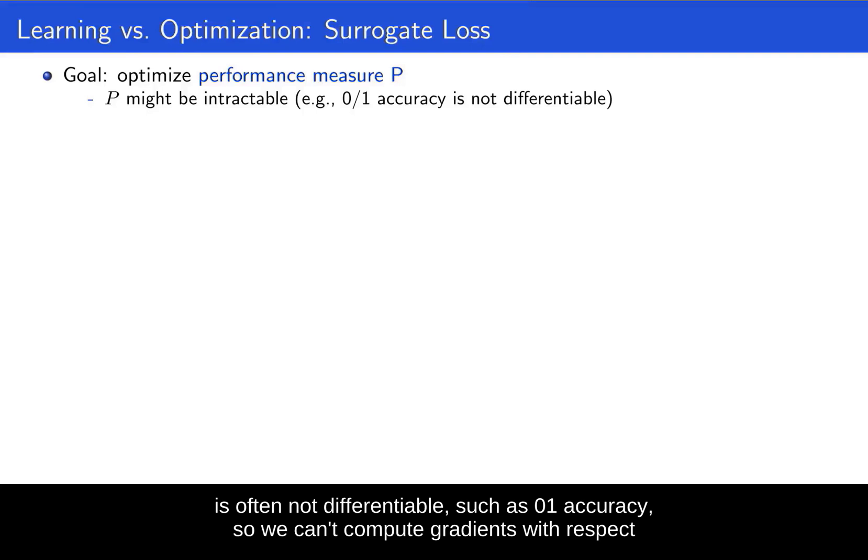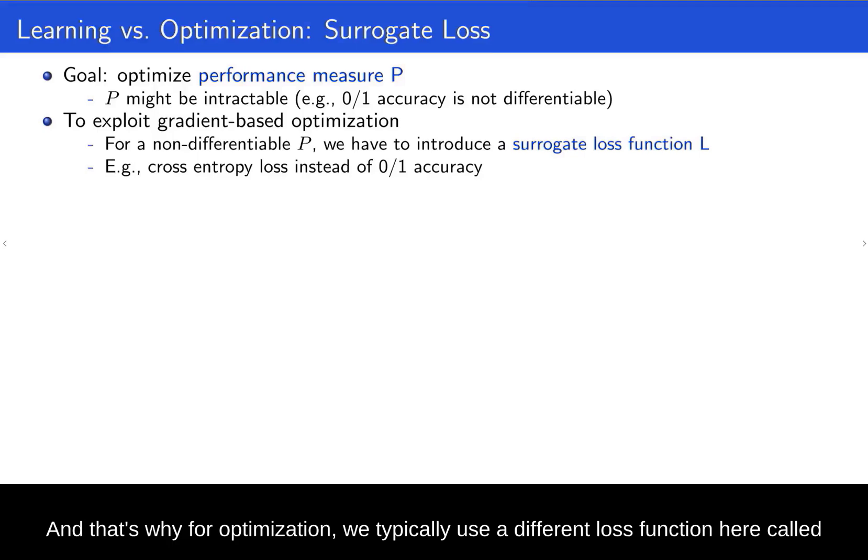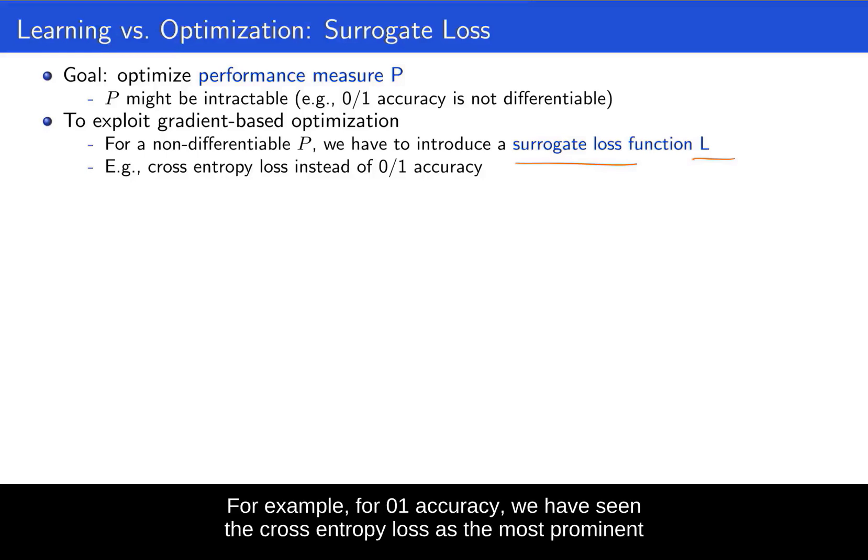So we can't compute gradients with respect to the 0/1 signal. And that's why, for optimization, we typically use a different loss function here called L, the surrogate loss function. For example, for 0/1 accuracy, we have seen the cross-entropy loss as the most prominent loss in deep learning.